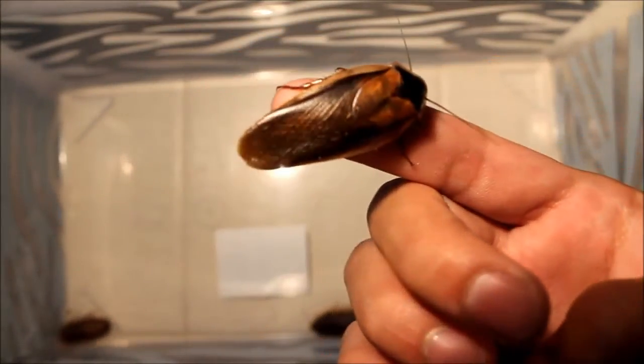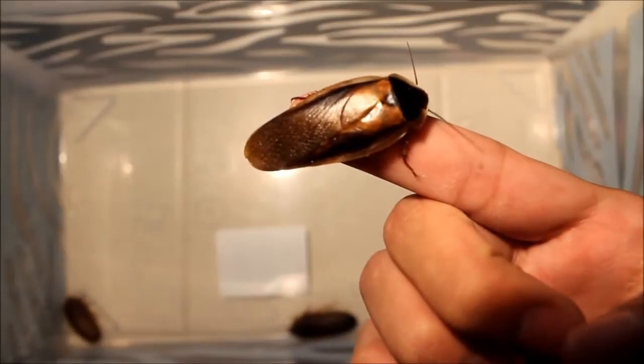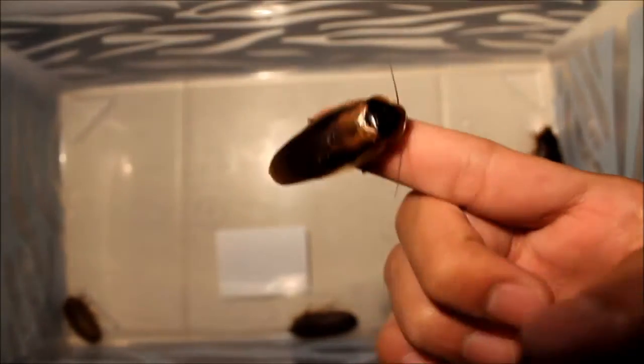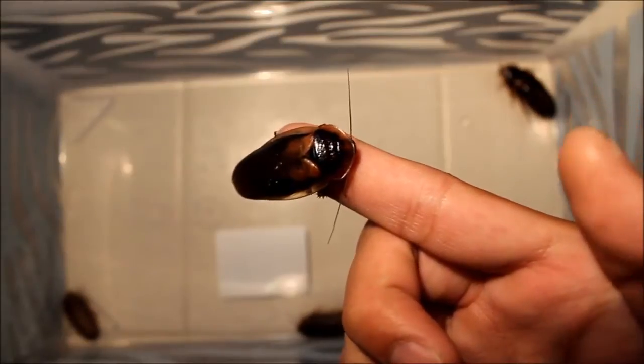This guy right here is an adult male. You can see he has wings but he won't really fly or anything. You can tell he's also shiny when they all turn adults, so they get pretty shiny.